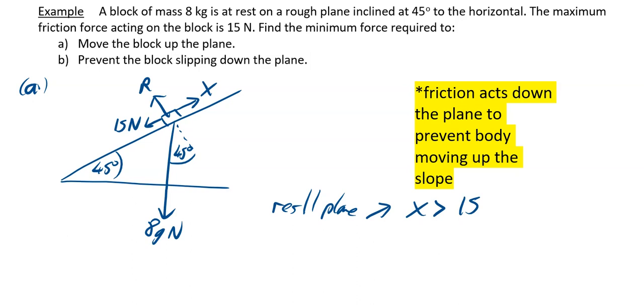So when this 8G is pulled round to here, it's actually going to be 8G sin 45, so your X must be greater than 8G sin 45 plus 15. Do that on your calculator, and what I got was 71.57 newtons to two decimal places.